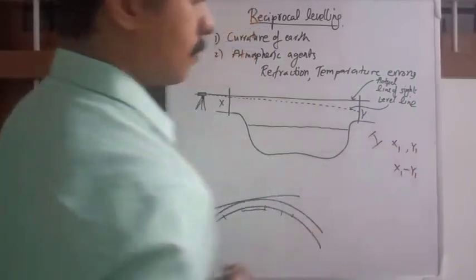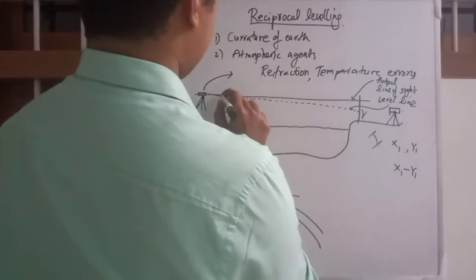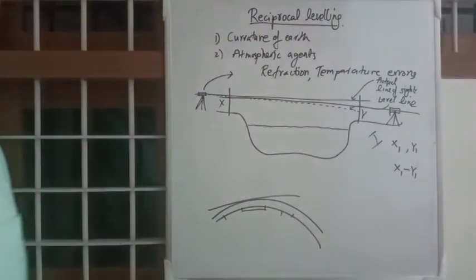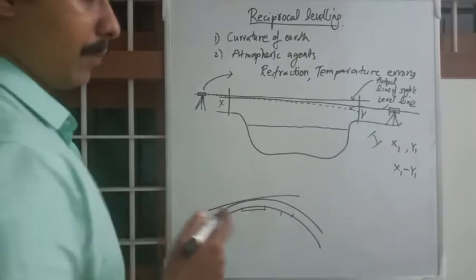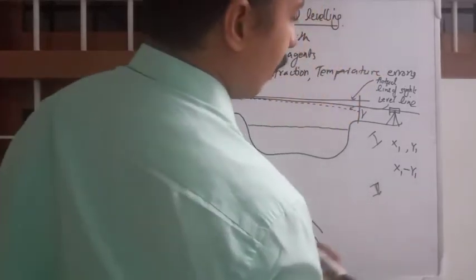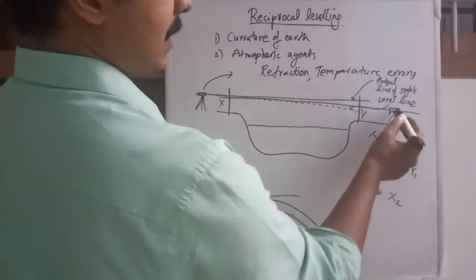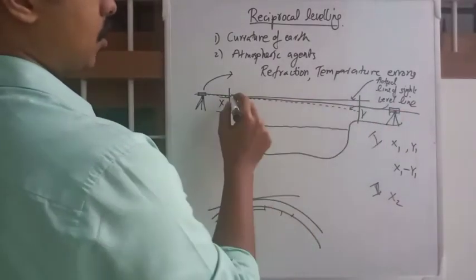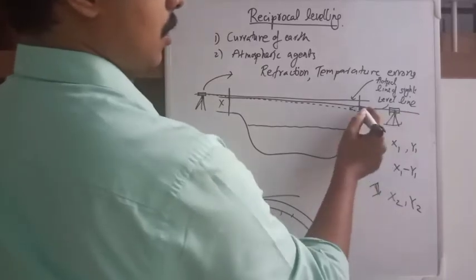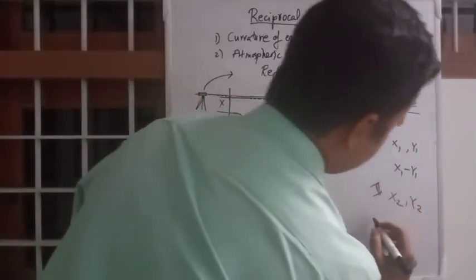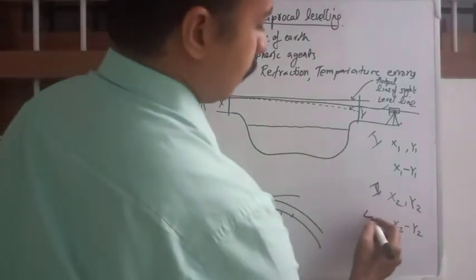Then we'll take the dumpy level and place it near Y, level it, and find out the next two values. There will be some kind of error but we are going to find out the correction. In the second instrument setup, x2 is the reading at X and y2 is the reading at Y. According to the second instrument setup, the level difference will be x2 minus y2.